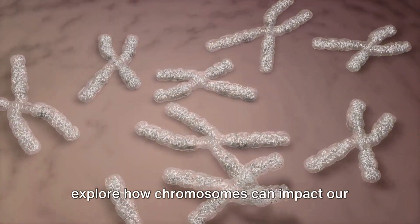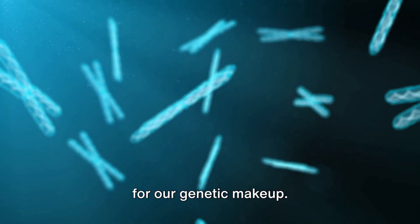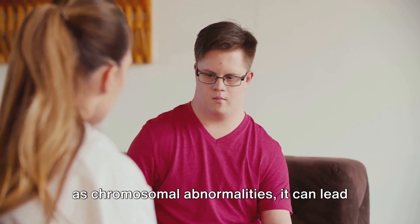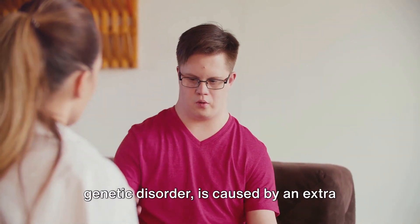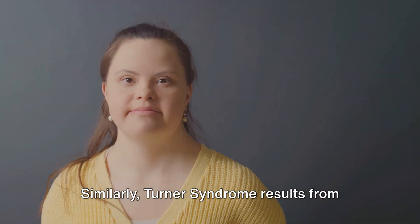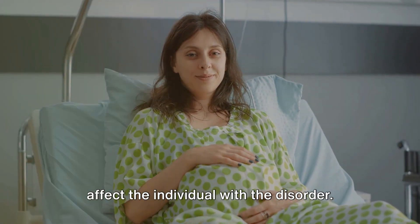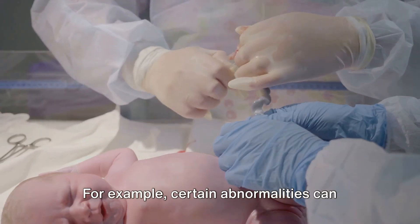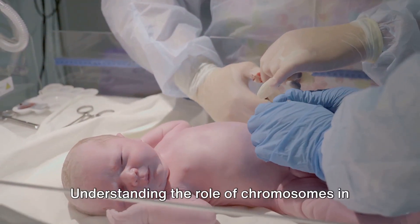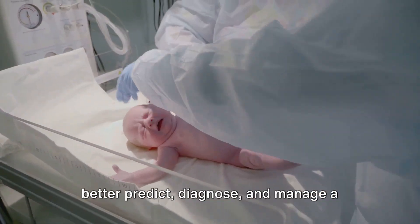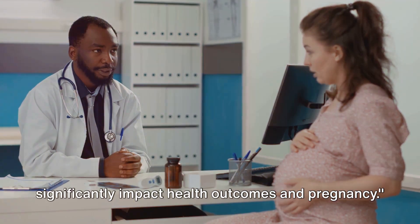Moving on from age and pregnancy, let's explore how chromosomes can impact our overall health. Each cell in our body carries a complete set of chromosomes acting as a blueprint for our genetic makeup. When these blueprints have errors known as chromosomal abnormalities, it can lead to a host of health conditions. For instance, Down syndrome, a well-known genetic disorder, is caused by an extra copy of chromosome 21. Similarly, Turner syndrome results from the absence of one X chromosome in females. Chromosomal abnormalities don't just affect the individual with the disorder. They can also significantly impact pregnancy outcomes. For example, certain abnormalities can increase the risk of miscarriage, stillbirth, or result in congenital disorders in newborns. Understanding the role of chromosomes in health is crucial as it allows us to better predict, diagnose, and manage a range of genetic disorders. Therefore, chromosomal abnormalities can significantly impact health outcomes and pregnancy.